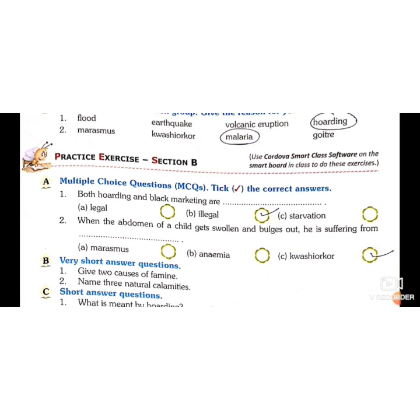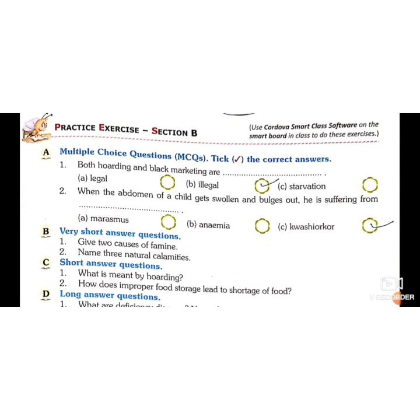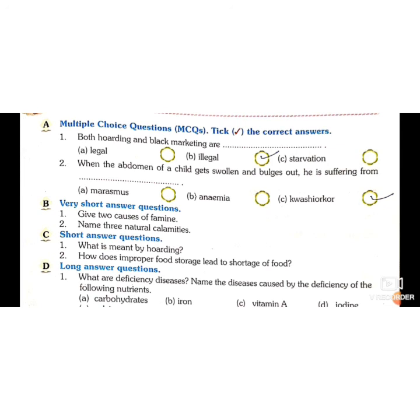Circle the odd one: Marasmus, Kwashiorkor, malaria, goiter. The answer is malaria, because Marasmus, Kwashiorkor, and goiter are deficiency diseases, while malaria is caused by mosquitoes. Both hoarding and black marketing are illegal. When the abdomen of a child gets swollen and bulges out, he is suffering from Kwashiorkor.